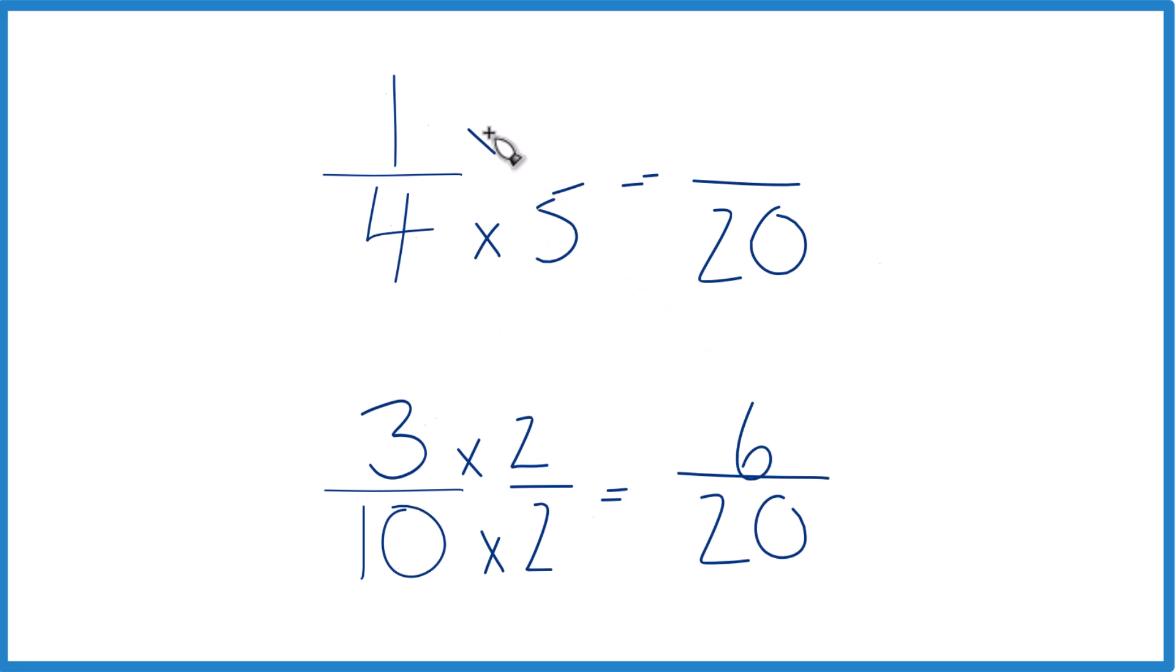Up top, I'm going to multiply the numerator by five. One times five, that's five. So now the denominators, they're the same. We compare the numerators.